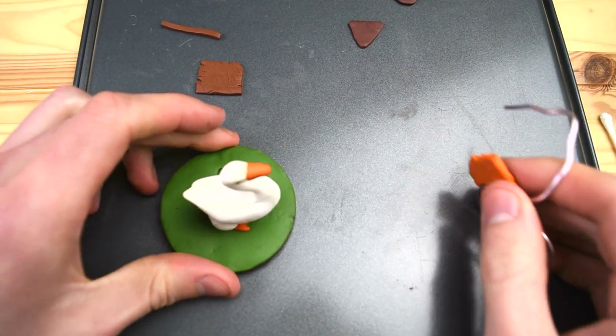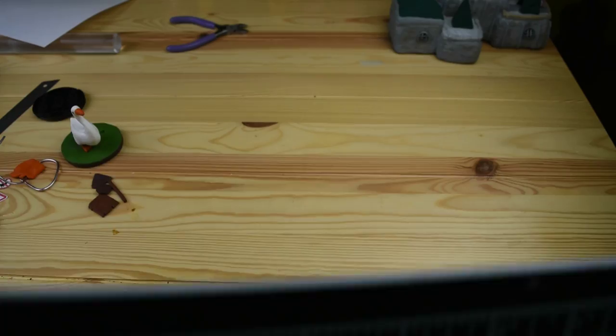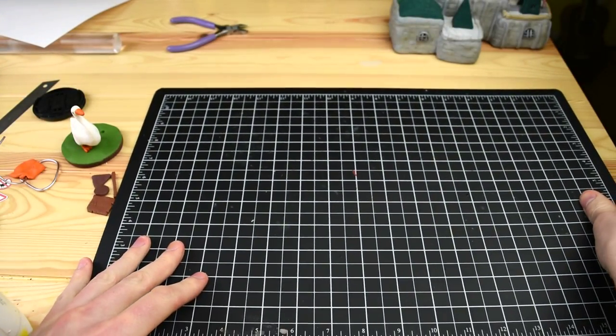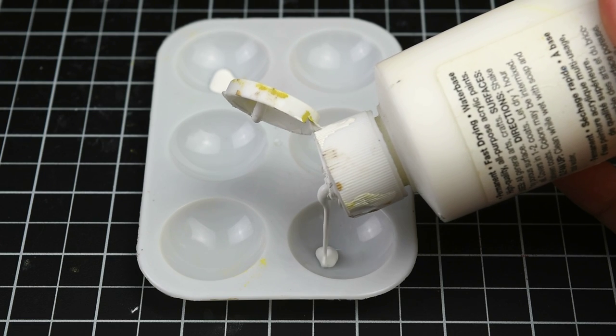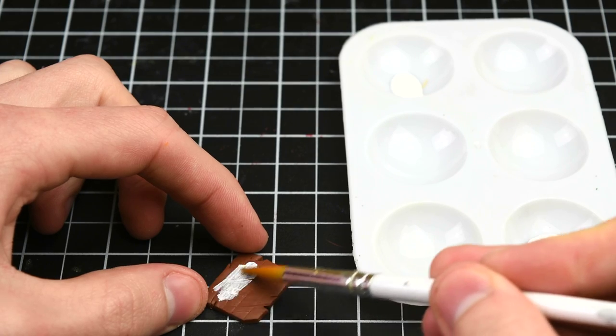So if you noticed, I used that wire to hold up the goose. He was really falling over a lot before I put him into the oven, so I had to hold him up with something, and this actually worked out very good.